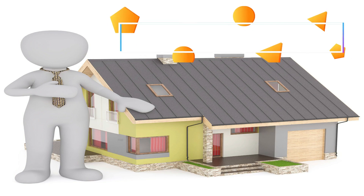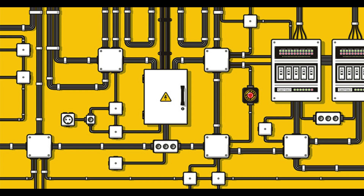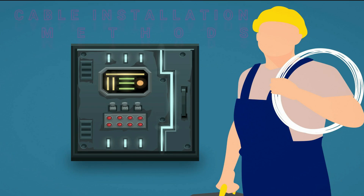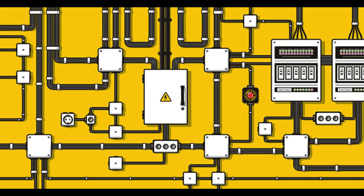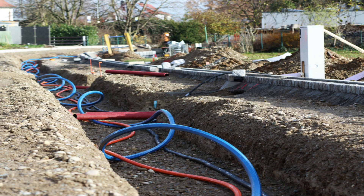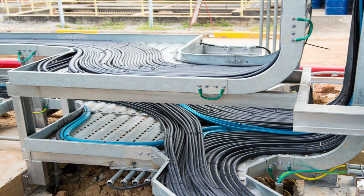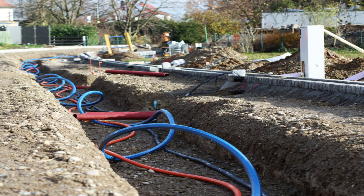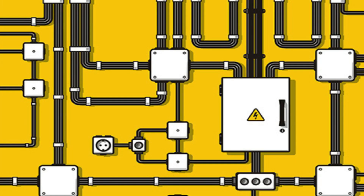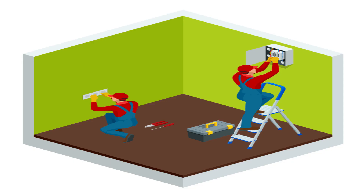Hello engineers, welcome to Real Consult. Today we'll be exploring the cable installation methods in building services engineering. Cable installation, which can also be called electric wiring, is the systematic laying of wires for the smooth flow of electricity current.